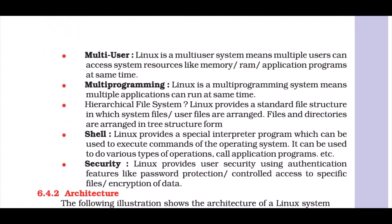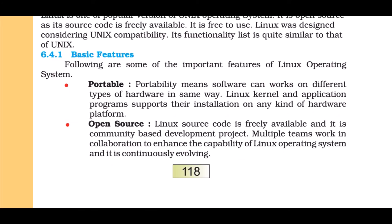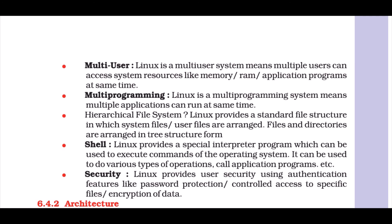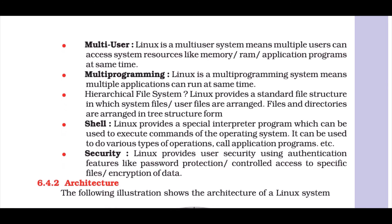Linux was designed considering Unix capability and its function list is quite similar to Unix. Basic features include: Portable — it can be taken from one machine to another; Open source — freely available; Multi-user — many users can work on it; Multi-programming; Hierarchical file system — files and directories arranged in tree structure; Shell — a special interpreter program used to execute OS commands and call application programs; and Security — using authentication features like password protection, controlled access to specific files, and encrypting data.